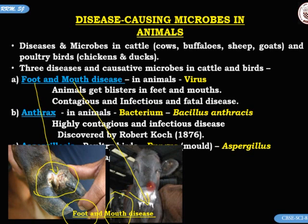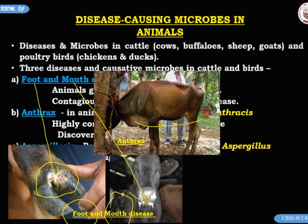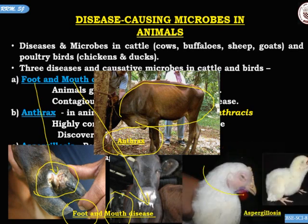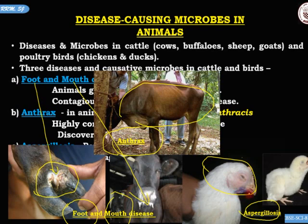The next picture is of a cow with anthrax. She looks quite lean and thin, unable to eat and drink, and if not treated on time she may die. The third picture shows aspergillosis — due to this disease the birds, especially chickens, feel very sleepy, cannot run around, won't eat or drink water, become very weak, and eventually die.